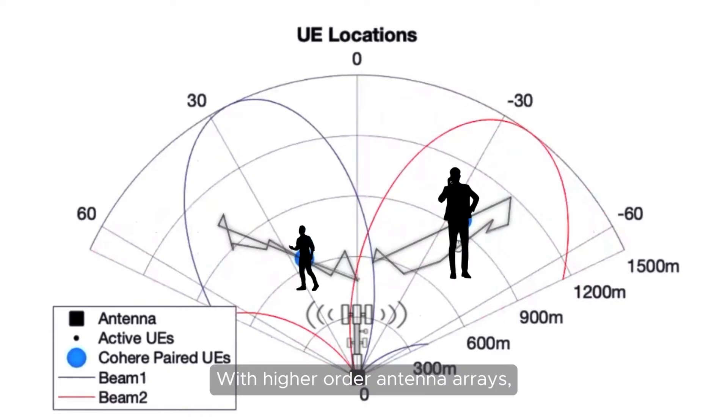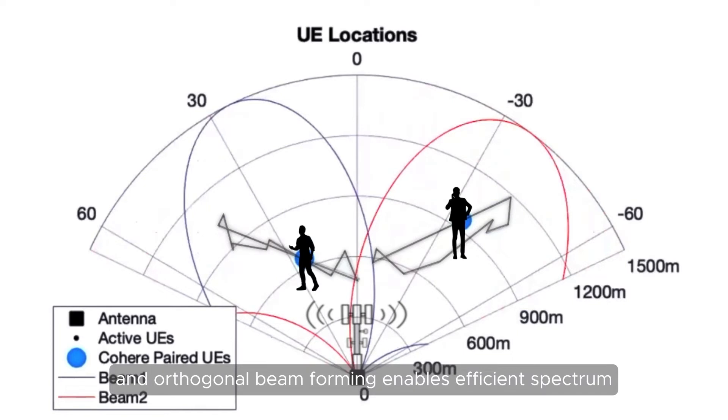With higher order antenna arrays, additional beams are supported for massive multi-user MIMO, and orthogonal beamforming enables efficient spectrum sharing between LTE and 5G.